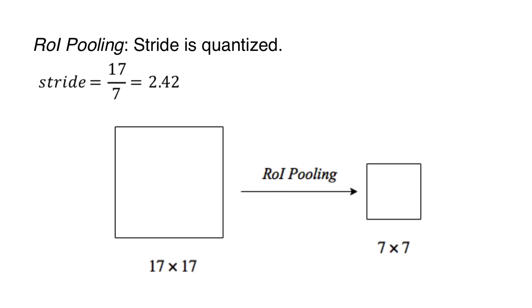Since a stride of 2.42 is meaningless, ROI pooling will quantize this value by rounding it down to 2. So it will use a stride of 2 along the width and the height. However, in doing so, it only considers the top 14 x 14 pixels in the 17 x 17 region. The remaining points are lost.